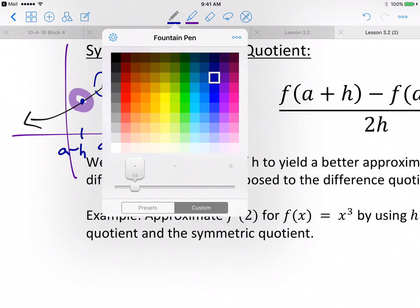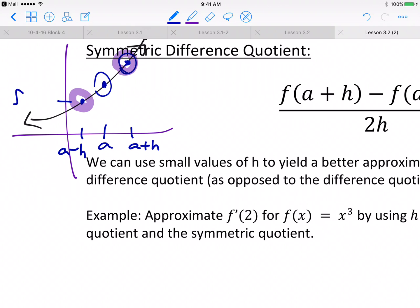So let's take a look at the corresponding y values. We have f of a minus h over here, and we have f of a plus h. And to find the slope through those two points, it's just a rise over run. So f of a plus h minus f of a minus h divided by